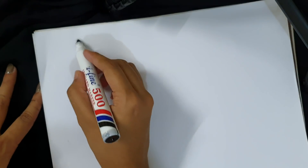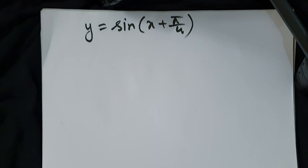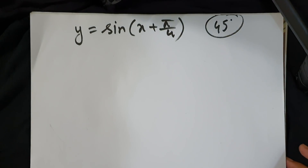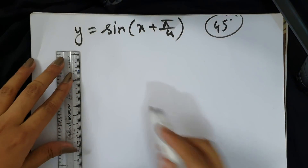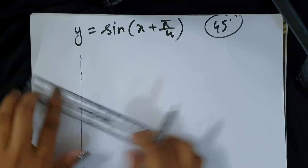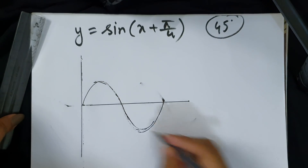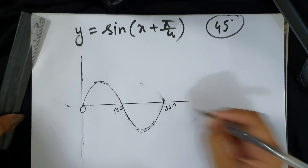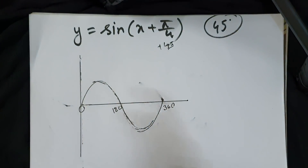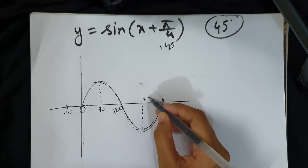Suppose y equals sin(x + π/4). Since π/4 is 180/4, that is 45 degrees. You can use radian mode. This graph has a phase shift — plus 45 means shift 45 degrees to the left. The graph goes 0, 180, 360 but shifted left by 45.